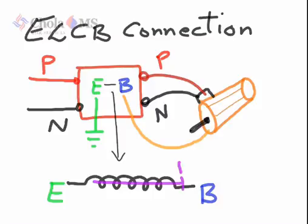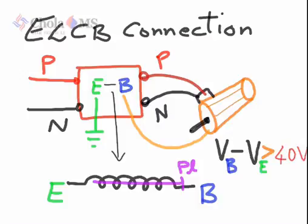There is a plunger operated by the solenoid which works when motor body voltage is 40 volts greater than the reference earth voltage. This is when the ELCB trips. Thanks for watching.